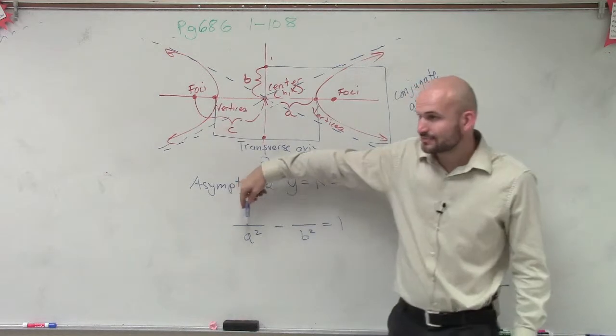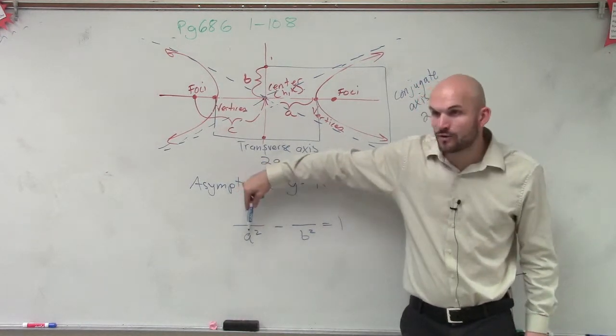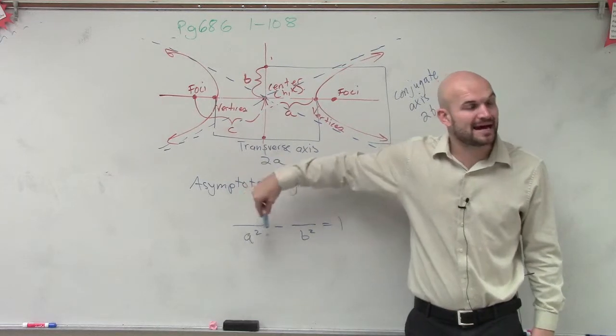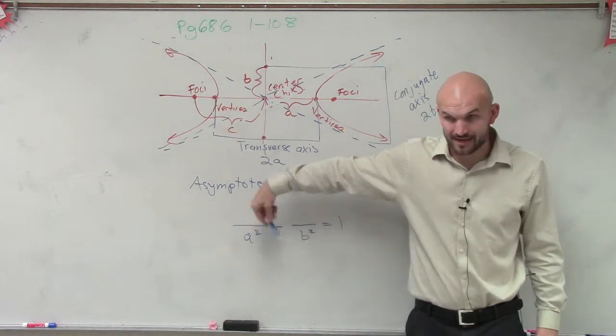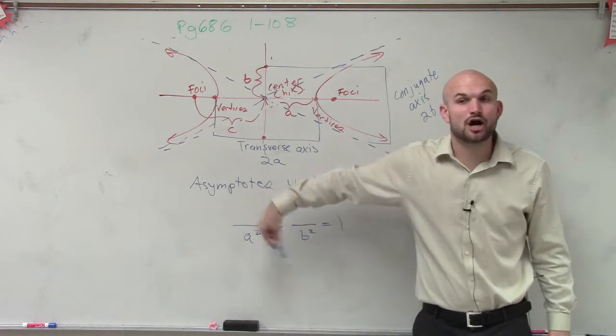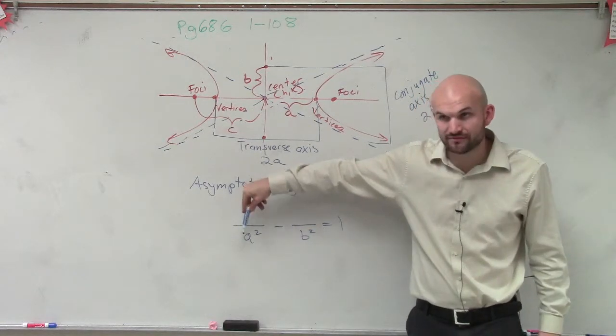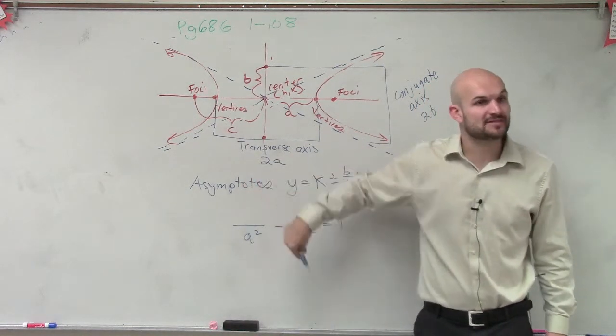Now, I don't care which number's larger or not. Your a is always going to be first. It's always going to be a minus b. Always. So an ellipse, a was always the larger of the two denominators. Now, a is always going to be first. So it's a squared minus b squared.